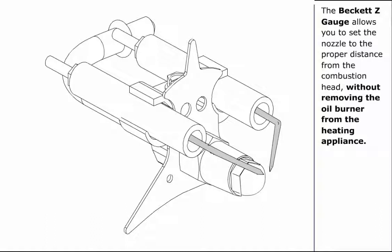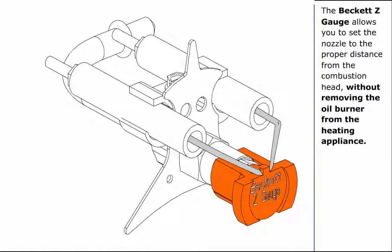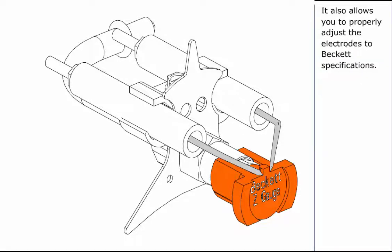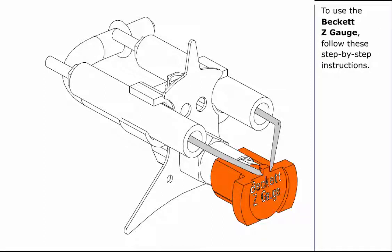The Beckett Z gauge allows you to set the nozzle to the proper distance from the combustion head without removing the oil burner from the heating appliance. It also allows you to properly adjust the electrodes to Beckett specifications. To use the Beckett Z gauge, follow these step-by-step instructions.